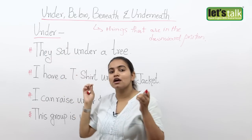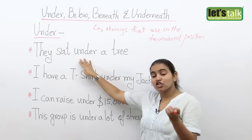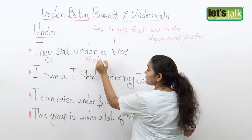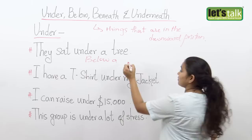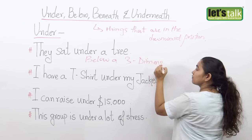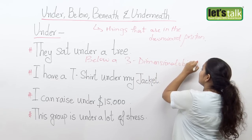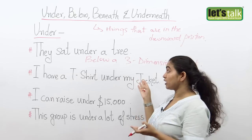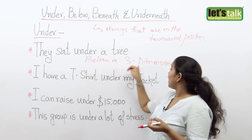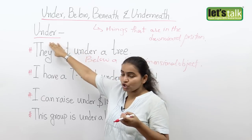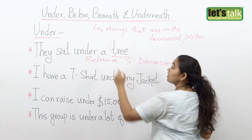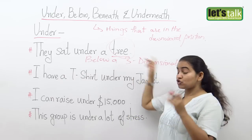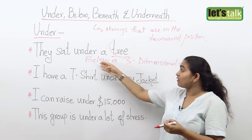The first word is under. The first context in which you will use the word under is to talk about something that is below a three-dimensional object. So we have the example sentence: they sat under a tree. Remember, I said below a three-dimensional object — so anything under a three-dimensional object like a tree, I use the word under.